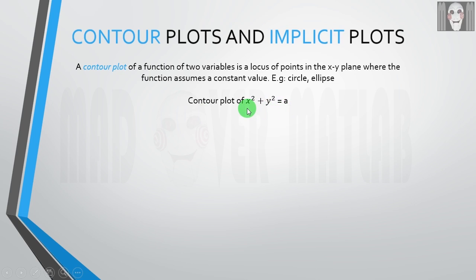This is the equation of a circle which has the center at the origin and the radius is root a. Before going to the actual syntax of plotting this contour, we will first need to create a grid of points on which we will sketch this contour, this circle.